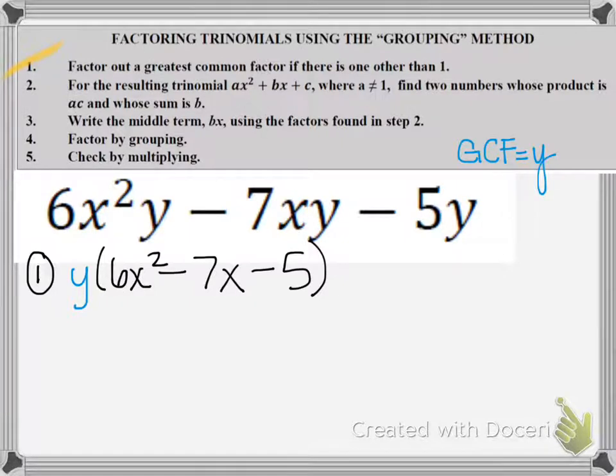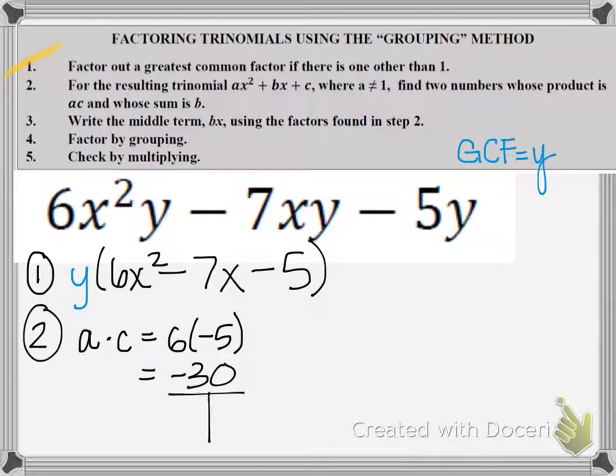Now I want to use the AC method or the grouping method because my a value is 6. So I'm on to step 2 now. If I do a times c, that means I'm doing 6 times negative 5 and that equals negative 30. So I need factors of negative 30 that add up to negative 7. So I can tell that I want 3 and 10. Now I want them to add up to negative 7, so I want the 3 positive and the 10 negative. And the reason I want those numbers is because 3 plus negative 10 is equal to negative 7.